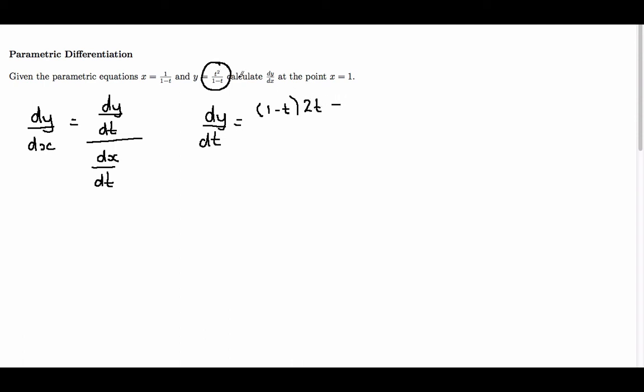Then take away t squared times the derivative of (1 minus t), which is minus 1, and divide all of that by (1 minus t) squared.